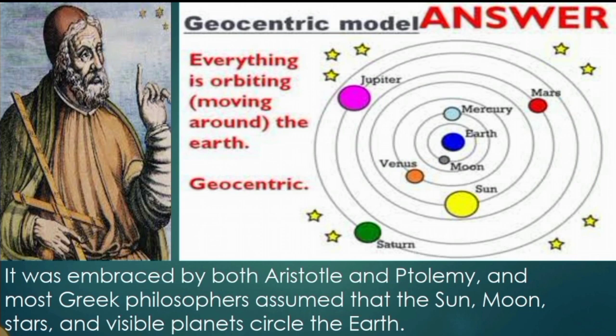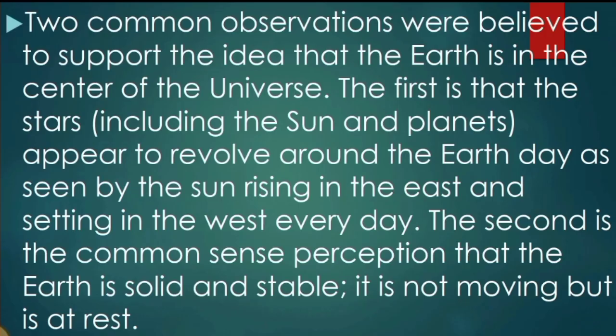This geocentric model was embraced by both Aristotle and Ptolemy, and most Greek philosophers assumed that the Sun, Moon, stars, and visible planets circled the Earth. Two common observations supported the idea that the Earth is at the center of the universe. First, the stars, including the Sun and planets, appeared to revolve around the Earth, as seen by the Sun rising in the east and setting in the west every day. Second, the common sense perception that the Earth is solid and stable — it is not moving.